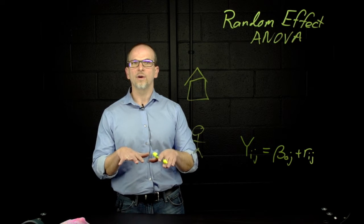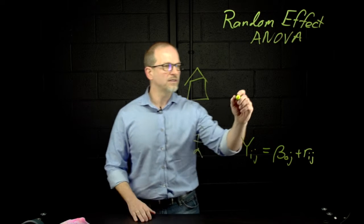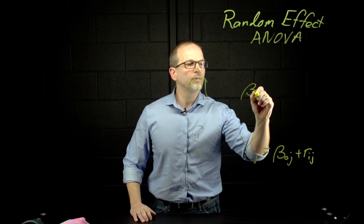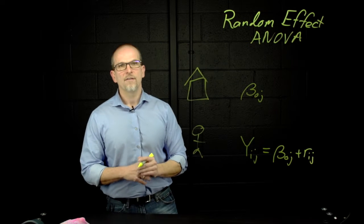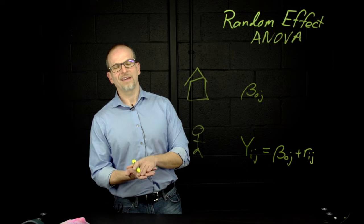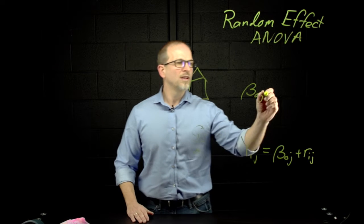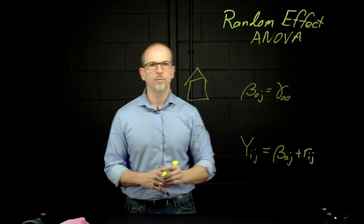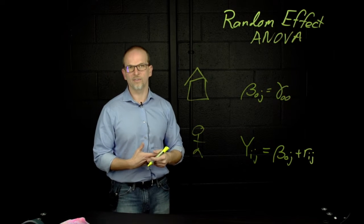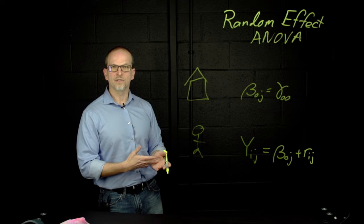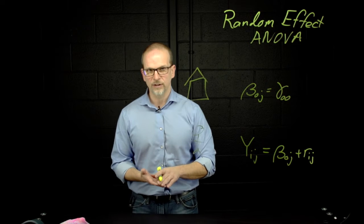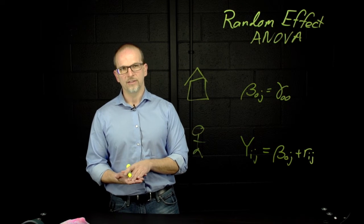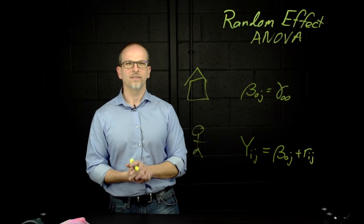Now with HLM though, we also have equations at level two. So we'll use beta zero j now to indicate the average math achievement for the jth school, and we will model that as a function of a gamma zero zero. So remember again, we have no covariates at the school level. Gamma zero zero is going to describe the average of the school averages. So oftentimes we'll refer to this as the grand mean.